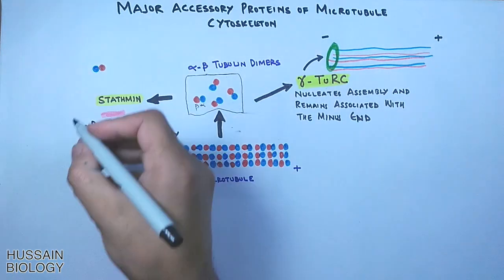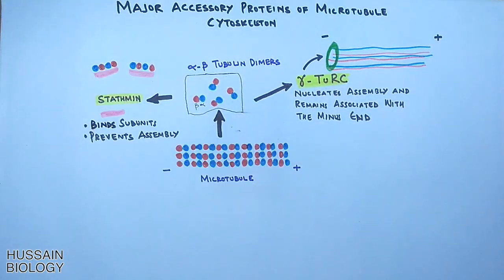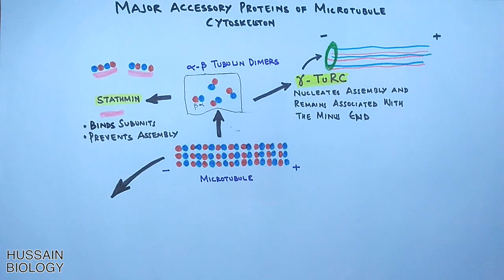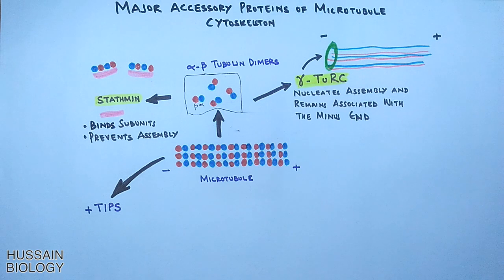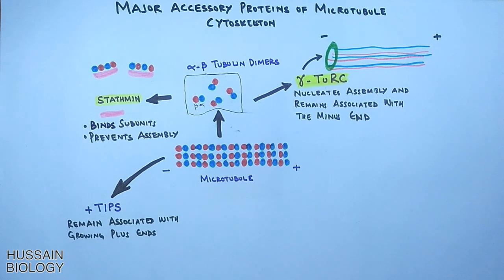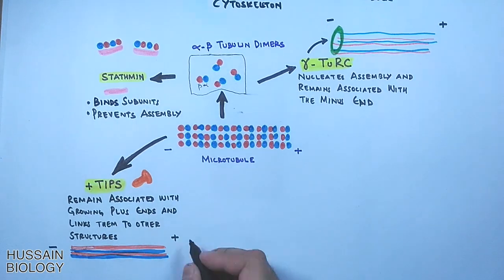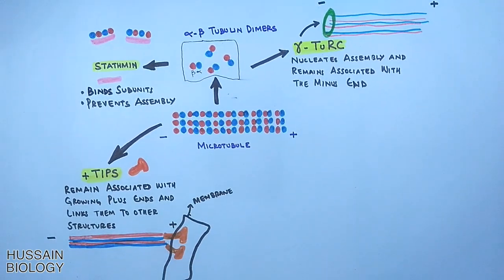The second protein is stathmin. It binds the subunits and prevents assembly. As shown in the diagram, the alpha-beta tubulin dimers are bound by the stathmin protein, thus preventing assembly. Then we have plus-tip proteins, also called plus-end tracking proteins. These proteins remain associated with the growing plus end and link them to other structures like the membrane, as shown in the diagram.